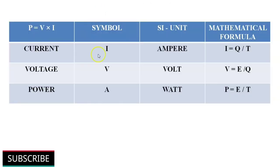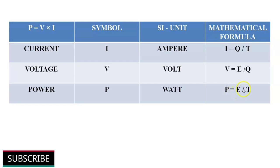Here is the summary of what we have learnt in this video. Power is the product of voltage and current. Current is denoted by symbol I, its unit is Ampere, and it is mathematically represented as I equals Q divided by T — that is, rate of flow of electrical charge. Voltage is denoted by symbol V, its unit is volt, and it is mathematically represented as V equals E divided by Q — that is, energy required to move a unit of charge. Power is denoted by symbol P, its unit is watt, and it is mathematically represented as P equals E divided by T — that is, rate at which energy is transferred or consumed in the system. That's all about current, voltage and power.